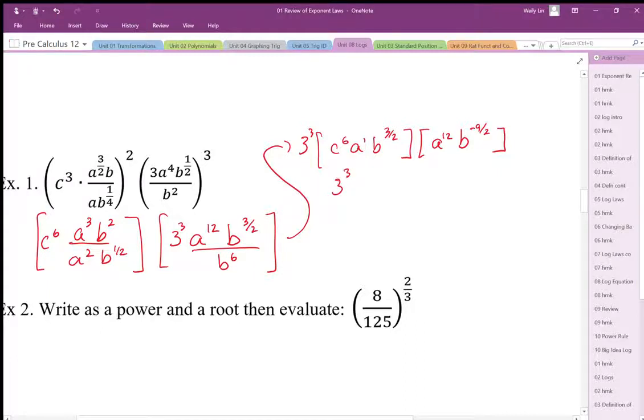Then combining these, I get—I'm going to do the a's first. a^13, 1.5 take away 4.5 leaves me with 6 over 2, negative 6 over 2, which is going to be negative 3.